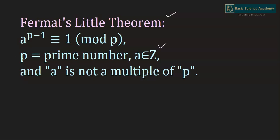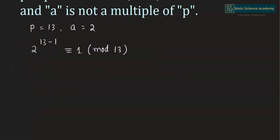So we have p equals 13 and a equals 2. Hence we can write 2 to the power of 13 minus 1 is congruent to 1 mod 13, which gives 2 to the power of 12 is congruent to 1 mod 13.